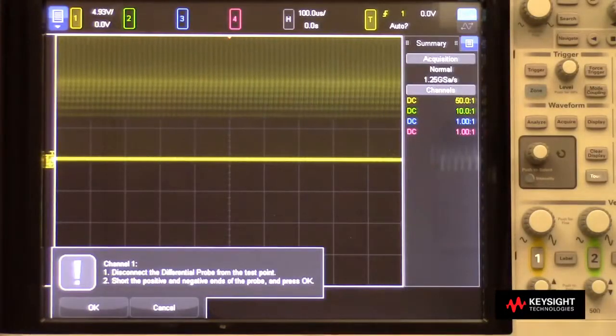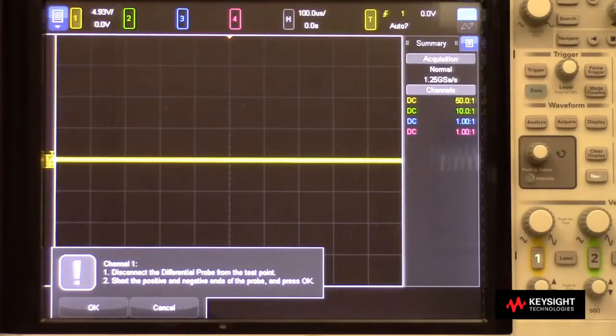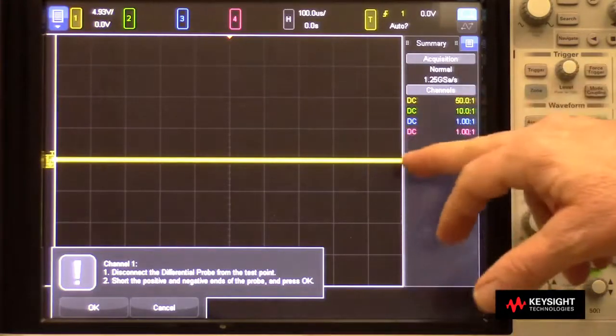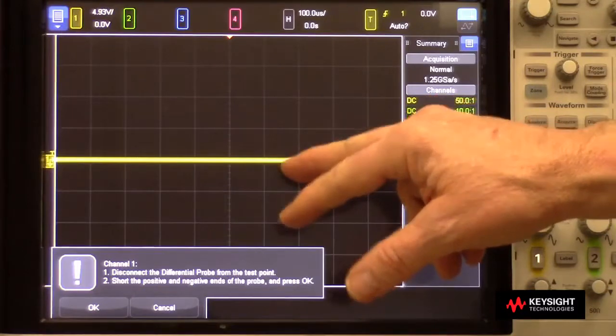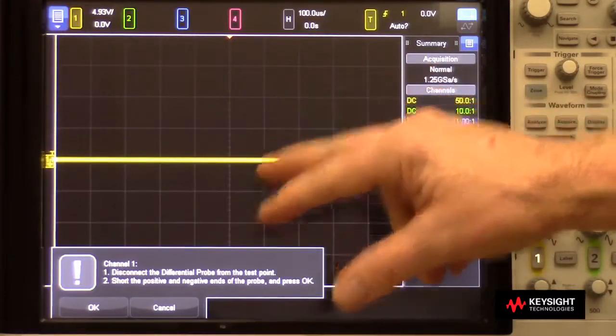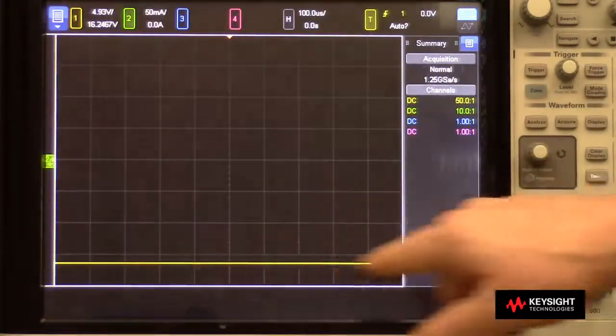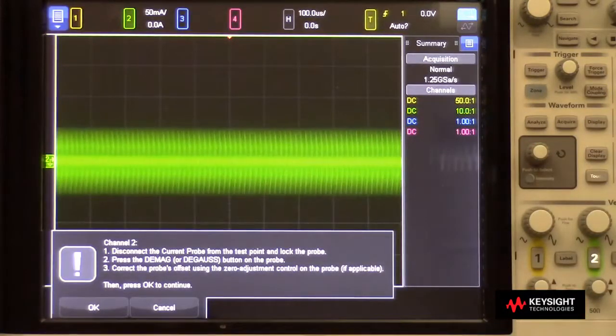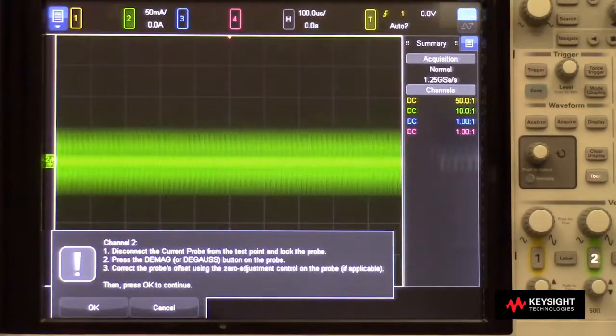Next, it instructs me to disconnect my voltage probe from my device under test, short the tips together, and here's zero volts or what should be zero volts. It's going to measure what it is and then compensate for it. So we'll press OK. It turns on averaging, makes a very accurate measurement of the average voltage here in that time window. I'll connect my voltage probe back up.